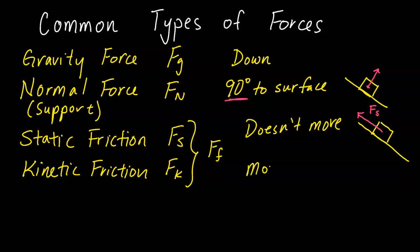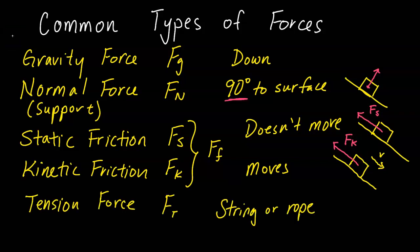Kinetic friction is friction when the object does move. For example, if this box were sliding down the incline, there still is friction and we would call this kinetic friction Fk. Next we have tension force, symbol Ft, and you know there's a tension force if there's a string or a rope.